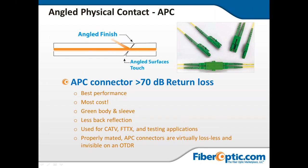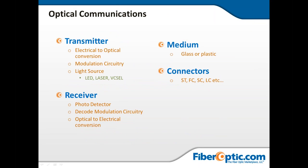For optical communication considerations: you have transmitters — electrical-to-optical conversion. Light sources include LED, laser, and VCSEL — these are all ways light is transmitted. The medium is the glass, and in some cases plastic fiber. The different connector types we covered — ST, SC, LC — connect these elements. Then you have receivers — photo detectors and decoders — that convert optical back to electrical, sometimes as media converters. These are the main buzzwords and categories to be aware of in optical communications.